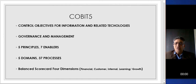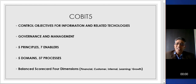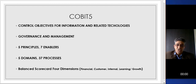COBIT 5 stands for Control Objectives for Information and Related Technologies. It means it has something to do with governance and management. You have to understand that there are five principles and seven enablers, five domains and 37 processes. And we have the balanced scorecard, which has four dimensions: financial, customer, internal, and learning and growth.